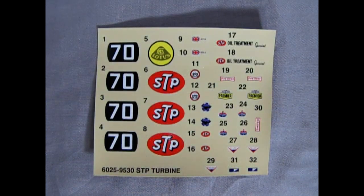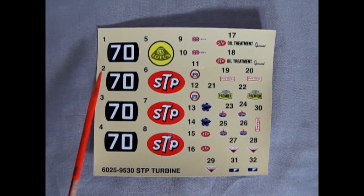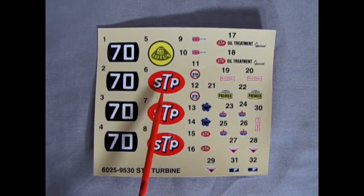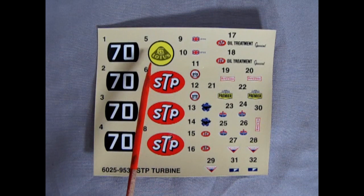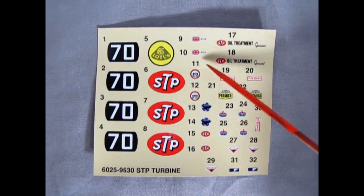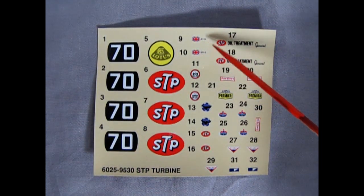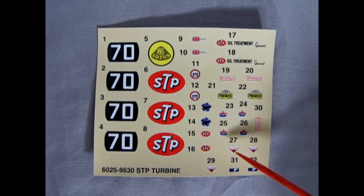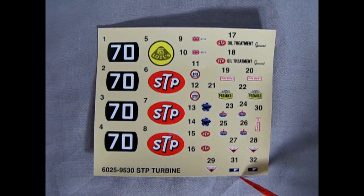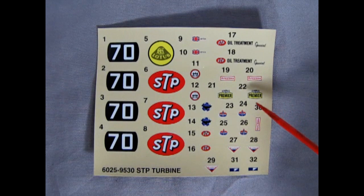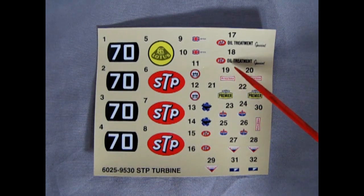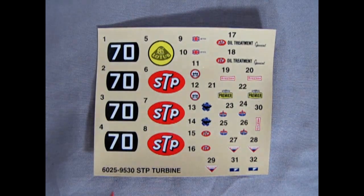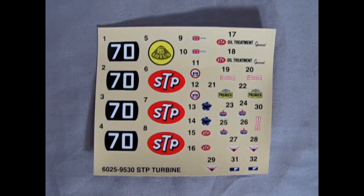And finally, we have the decal sheet for STP turbine car. With the big number 70s on here, there is a lot of sponsors going on, including STP. And then of course, we've got our Lotus brand logo right there, as well as the little British flags with Lotus written on them. And then here's where we get into all our sponsorship decals. And as you can see, there are a lot, including the little MPC Swish here, and the Firestone Premier, STP oil treatment special, all this kind of stuff. So again, a very nice detailing work for our STP turbine car.